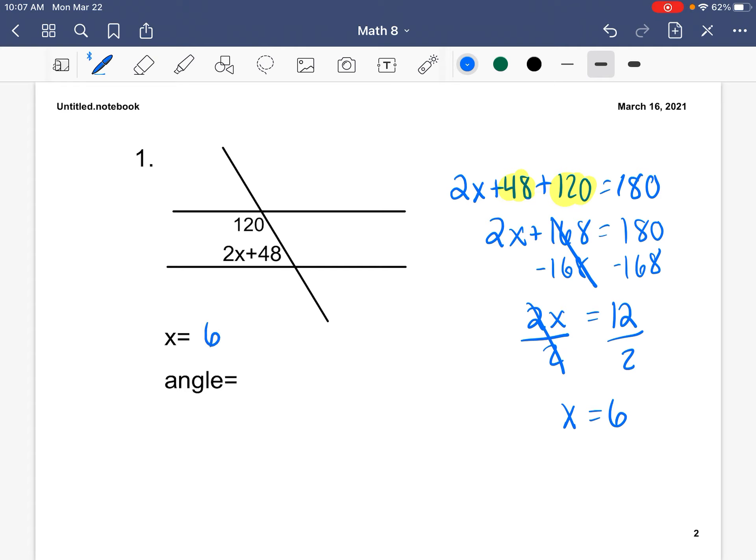So we know our x is 6. And then the next thing we need to do is solve for the missing angle that's right here. So what we are going to do is plug 6 in for x in parentheses, and then plug that all in our calculator. So our missing angle is 60 degrees. And this makes sense because 120 plus our 60 from here equals 180 degrees.